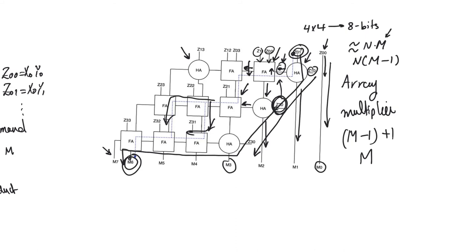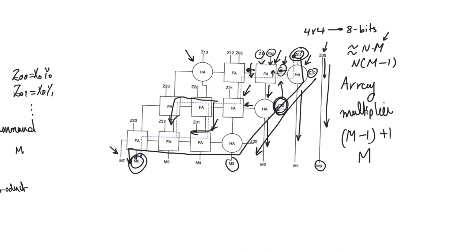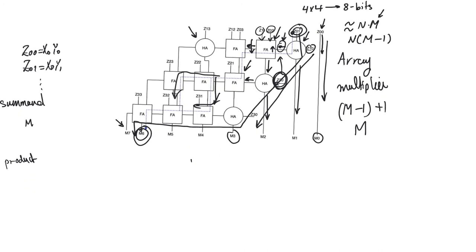Because the logical effort of all paths is equal, sizing cannot improve the multiplier's delay — you'd just increase everything and end up with the same delay and logical effort. Now let's write an expression for the critical path delay. T_mult is a sum of some delays and carry delays. We don't include half adder sum delays except for the first adder, since in all other cases a full adder is the alternative, so the half adder is not part of the critical path.